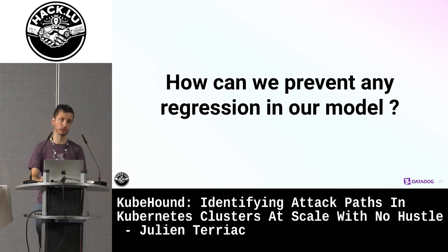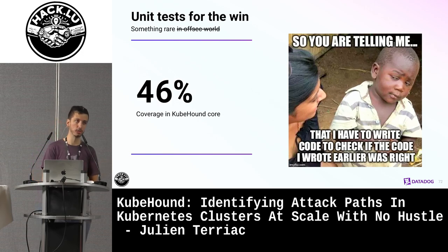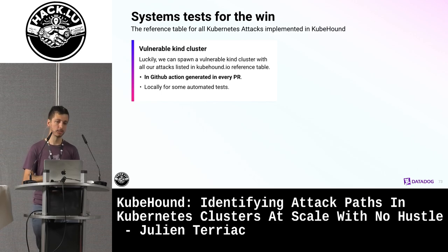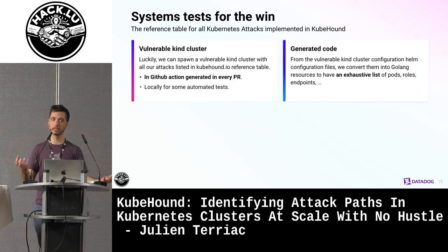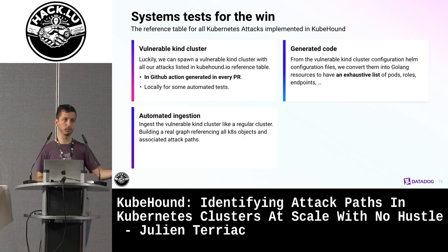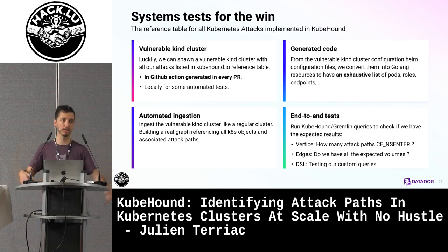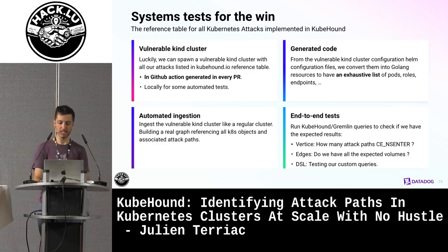Now that we have all the attacks, how do we prevent regression? We don't want an attack to disappear from the model. First, of course, unit tests — all developers have unit tests. But unit tests alone aren't great enough to cover everything. So we made what we call system tests: for every single pull request, we spin up a vulnerable Kind cluster, generate all the assets — pods and endpoints — in Go, run automated ingestion using KubeHound across all different dumping and ingesting methods, and then compare the results against expectations. This ensures there's no regression when we add new code, and that the entire model is still present.